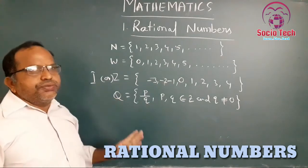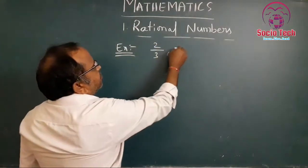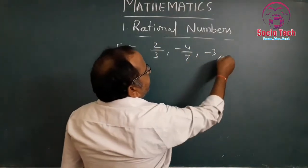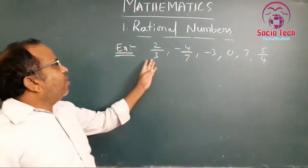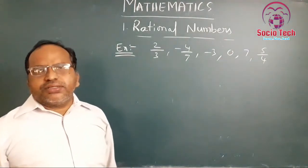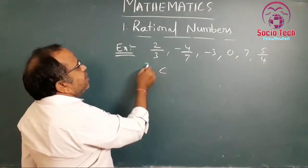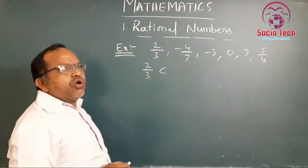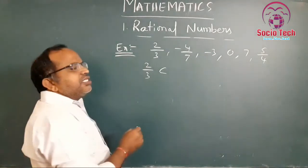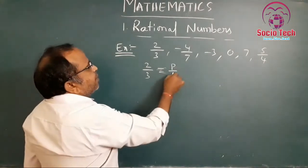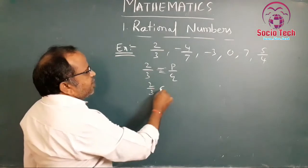Examples of rational numbers: 2/3, -4/7, -3, 0, 7, 5/4 — all are examples of rational numbers. For example, 2/3: here 2 is the numerator and 3 is the denominator, which is in the form of p by q. That is why 2/3 belongs to the rational numbers.